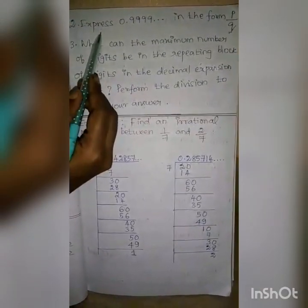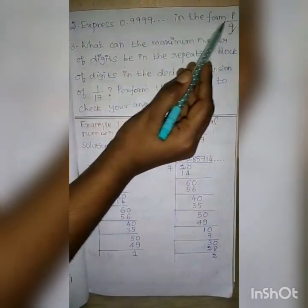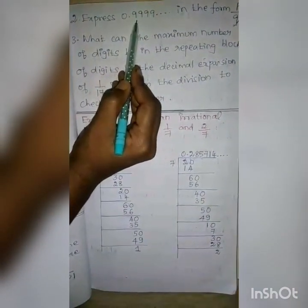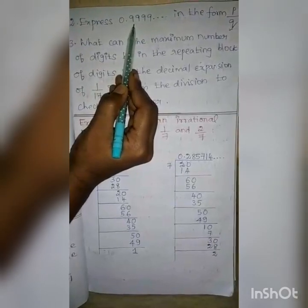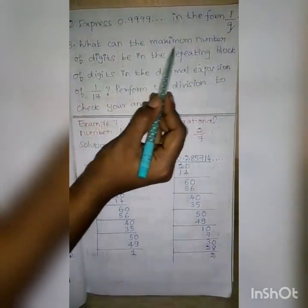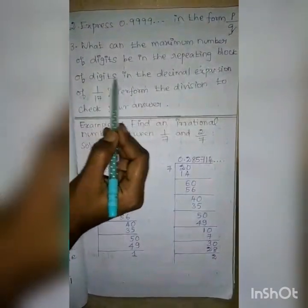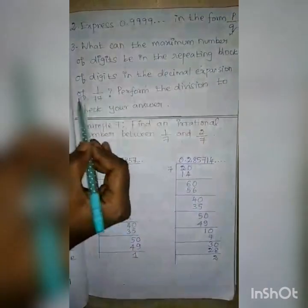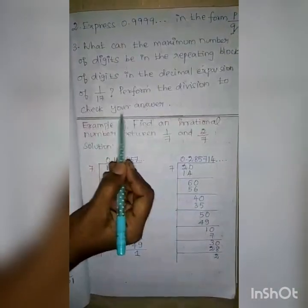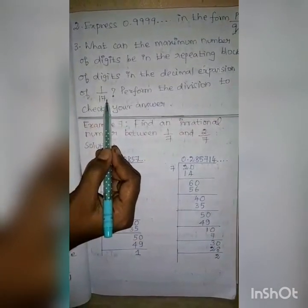Second question: Show that 0.9999 etc. equals 1, expressing it in the form of P by Q. Here, only one number is repeated so multiply by 10. Third question: What can the maximum number of digits be in the repeating block in the decimal expansion of 1 by 17? Perform the division to check your answer — divide 1 by 17 and find the quotient.